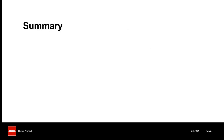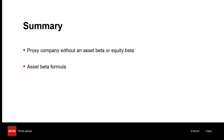In summary, Modigliani and Miller's Proposition 2 formula is useful when you've been provided with information about a proxy company without an asset or equity beta. If an asset beta or equity beta is provided, it will be much easier to use the asset beta formula. During the exam, it will be easier to use the rearranged version of the Proposition 2 formula, particularly when calculating an ungeared cost of equity. The rearranged formula is included on the formula sheet from the September 2024 exam session onwards. Thank you for joining me for this session, and good luck with your AFM exam studies.